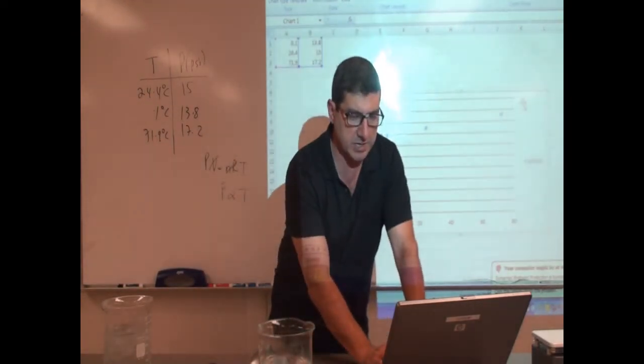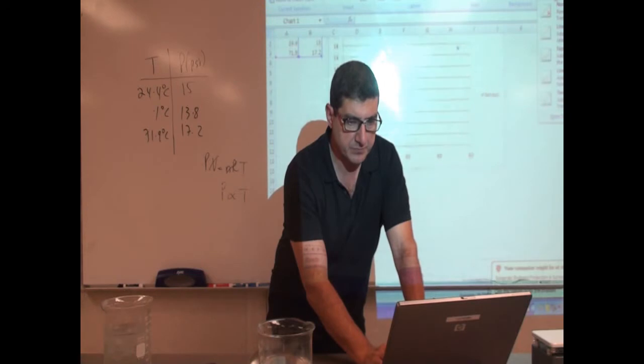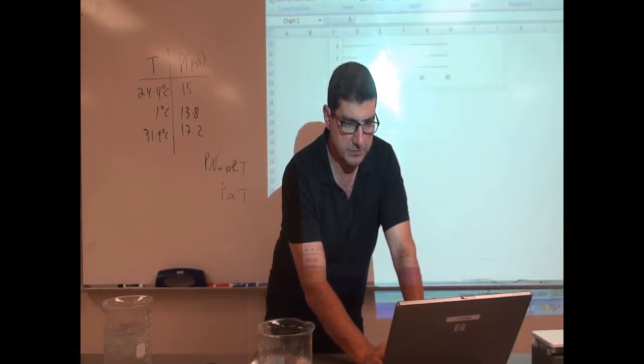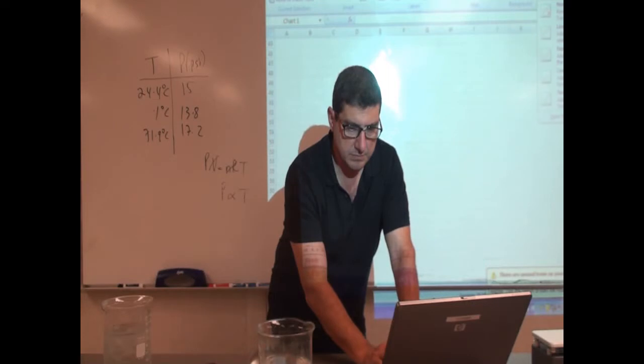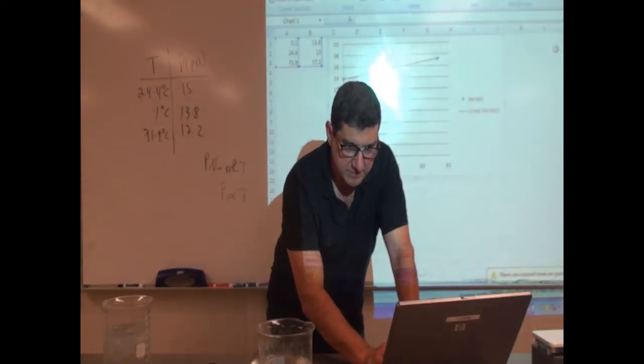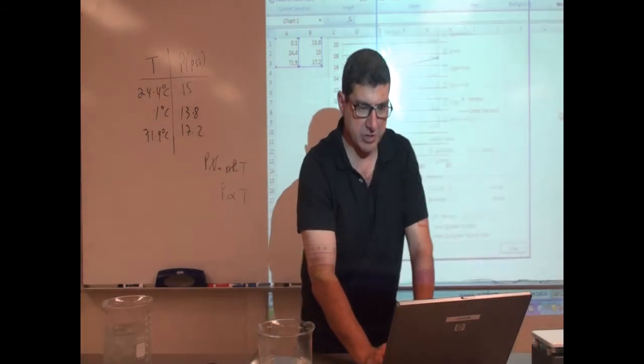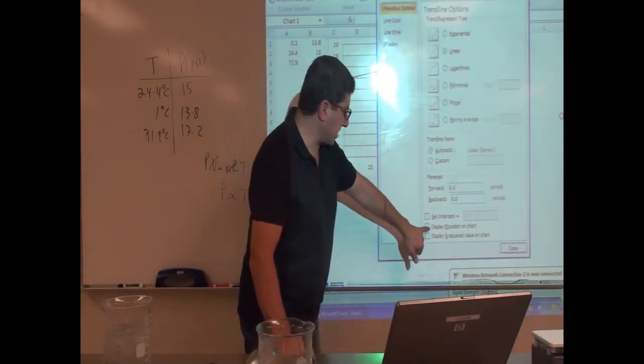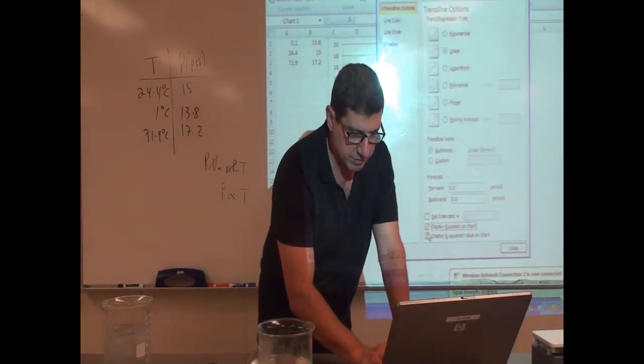So then I'm going to go to Excel and I'm going to say, give me the trend line. Then I'm going to say linear line. And then I'm going to say a trend line. More trend line options. And then under more trend line options, you can say displayed equation on the chart, displayed R squared value. Display the equation, displayed R squared value.